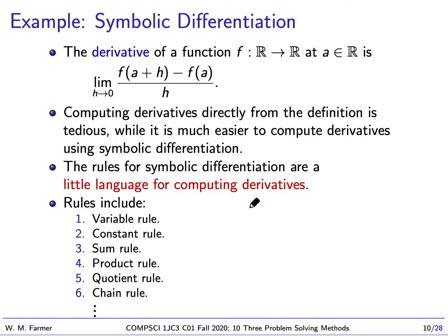It's much easier to compute derivatives using symbolic differentiation. What is symbolic differentiation? It is a set of rules for doing differentiation, and these rules form a little language for computing derivatives. The rules include the variable rule, constant rule, sum rule, product rule, quotient rule, chain rule. We have rules for all the trig functions, rules for the exponential function, rules for the logarithmic function. These rules together form a little language, and using those rules we can compute the derivatives of a huge family of functions.